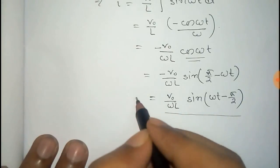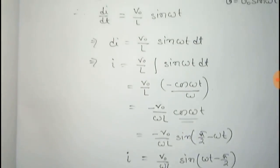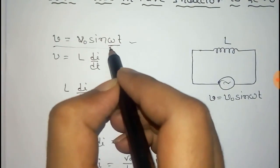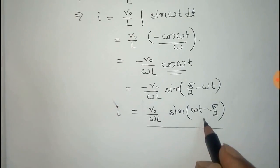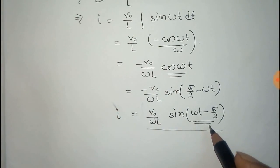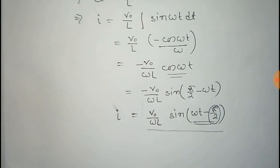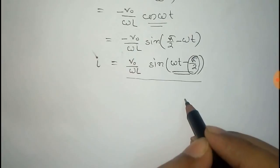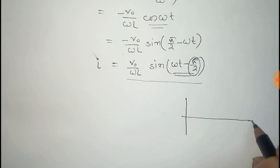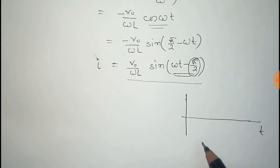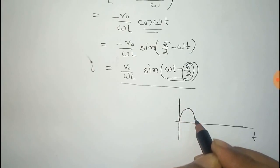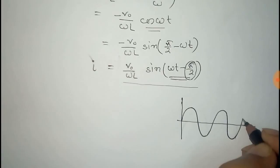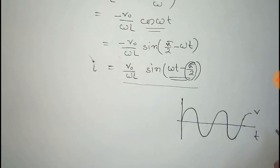This is the equation of instantaneous current, and this is the instantaneous voltage. The phase part for voltage is omega t, and for current it is omega t minus 90 degrees — so current always lags behind voltage by 90 degrees. If we plot current and voltage versus time, the voltage curve is V₀ sin(ωt) and the current curve is I₀ sin(ωt − π/2).